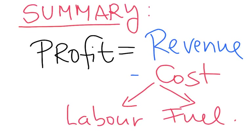As a summary, profit is the difference between revenue and cost, and the most important cost items are labor and fuel. If we manage to reduce those costs and manage to increase revenue, that will be the way to be profitable.